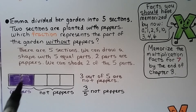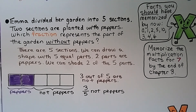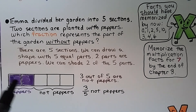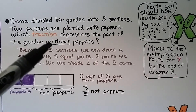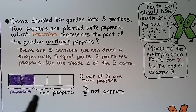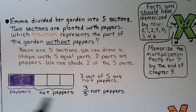Emma divided her garden into five sections. Two sections are planted with peppers. Which fraction represents the part of the garden without peppers? We can draw a shape with five equal parts and shade in two parts that are peppers. Two of the five parts are peppers. We can see three out of the five sections are not peppers. That means three-fifths are not peppers. Sometimes, drawing a quick picture can help us solve a problem so we can see and organize the information.